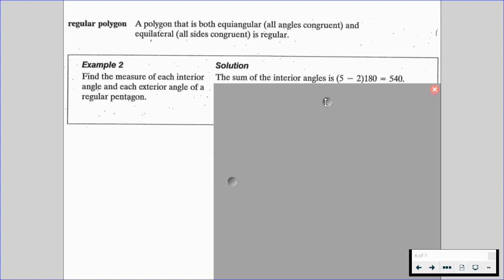We now found the sum of the interior angles, but we need to find each angle. So to do that, we're going to divide by 5. Since there's 5 angles and they're all congruent, we're going to take the total sum and divide it by 5. So we get 108 degrees at each interior angle.